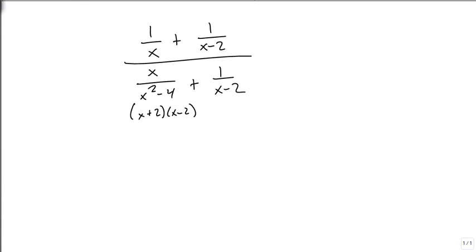And again, we're going to factor this. We're going to find our LCD, which is x times x minus 2 times x plus 2. And we're going to multiply that to the top and the bottom.